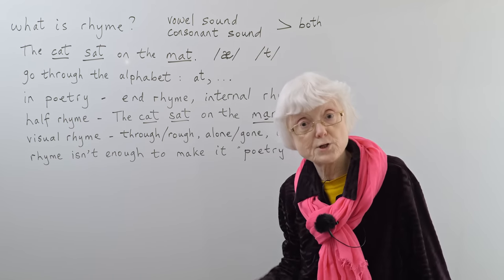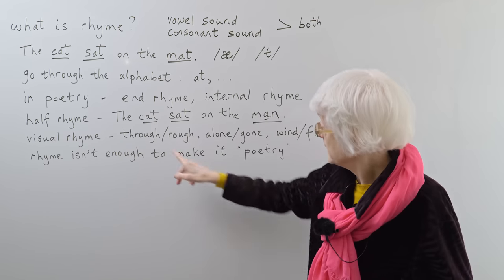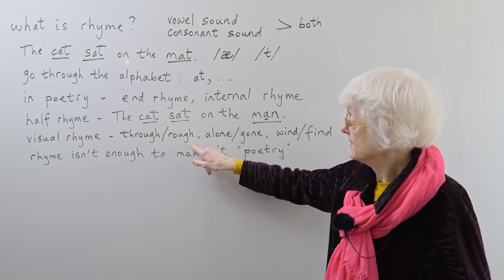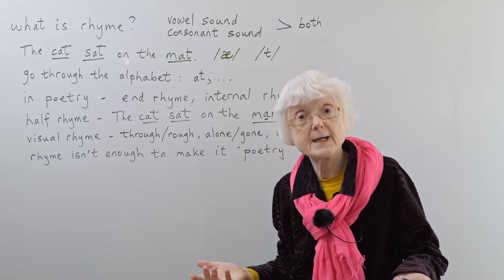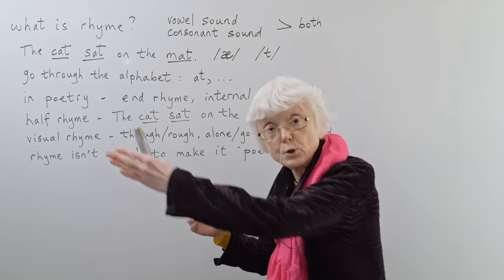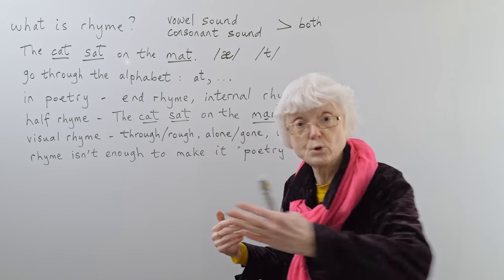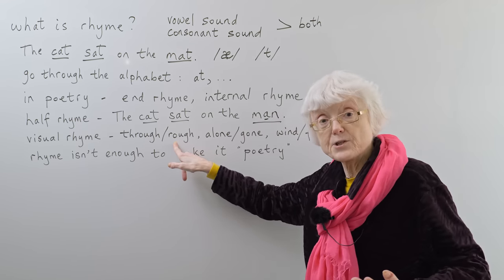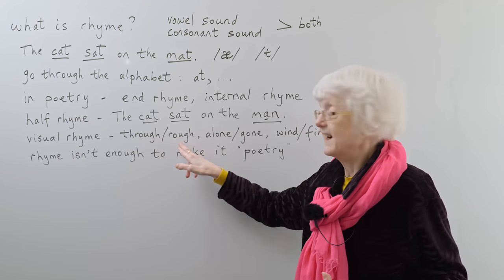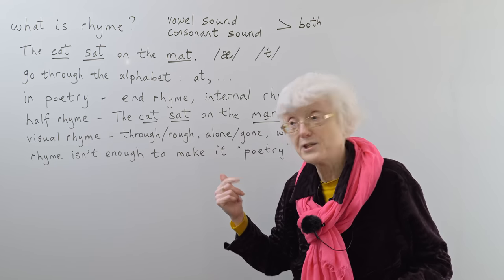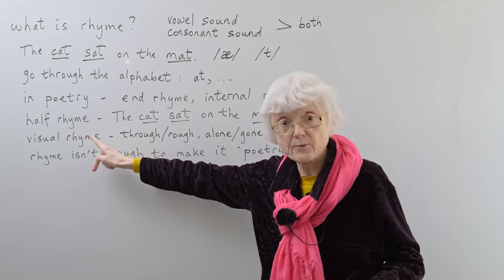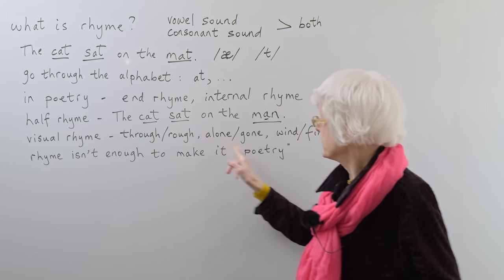And then you can also have a visual rhyme when you're seeing it in print. If you look at these two words, they've got R, O, U, G, H, both of them. But when you say them, you find that they have different vowel sounds. This is through. When you go through somewhere, through a tunnel, the train went through the tunnel. But this word is pronounced rough. So this is through, and that's rough with an F sound at the end. They look so similar, but they sound completely different. So that's a visual rhyme, but it's not a sound rhyme.